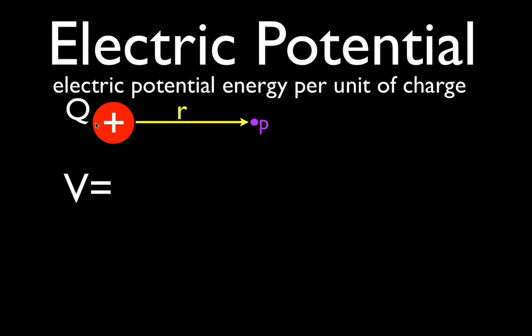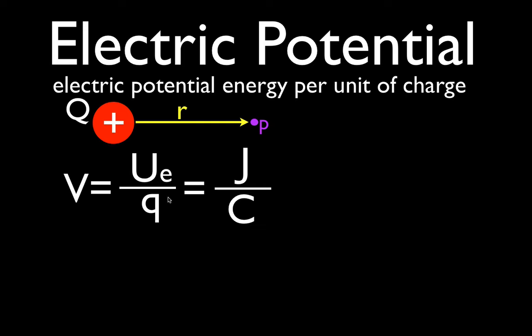Electric potential — V is the symbol for potential — is equal to electric potential energy per unit of charge. So that's UE divided by q: UE is our electric potential energy, and lowercase q is the charge that would be placed at this point, some distance away from the main capital Q charge that creates the potential. Electric potential energy is measured in joules, charge is measured in coulombs, so joules per coulomb are the units for potential, which we call the volt.